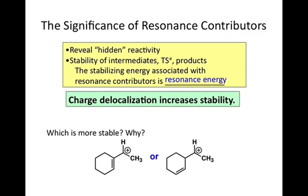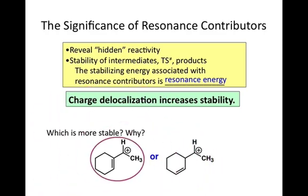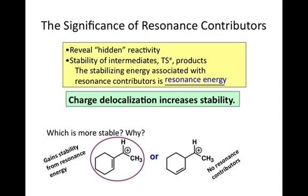Now let's go over which one's going to be more stable — the one on the left and the one on the right. It is indeed going to be the one on the left being more stable. The reason for that is that there's no resonance that can be drawn for the molecule on the right. We can't move those pi electrons to help out that positive charge. The greater stability is from the resonance energy shown for the molecule on the left.